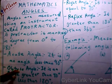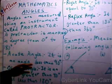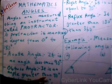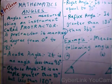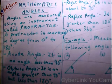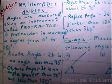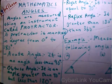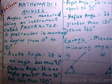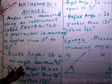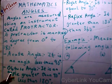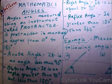The next one is an obtuse angle. An obtuse angle is an angle greater than 90 degrees but less than 180 degrees. Any angle that ranges from 90.1 up to just below 180 is called an obtuse angle. For example, 91 degrees, 150 degrees, 179 degrees — all of these are obtuse angles.